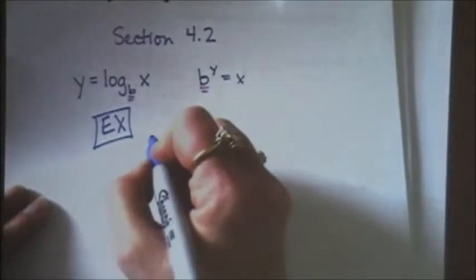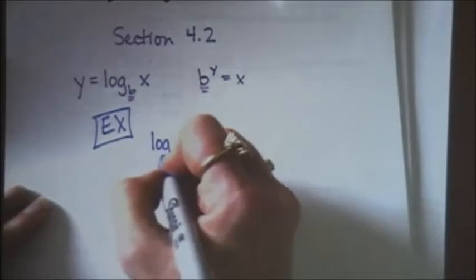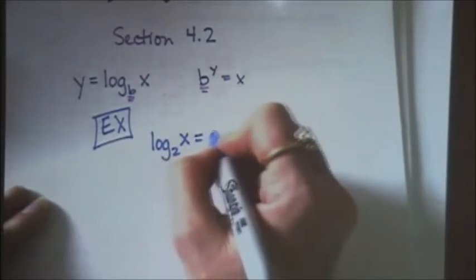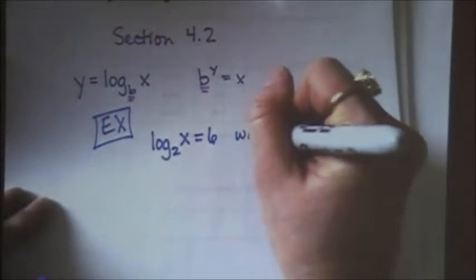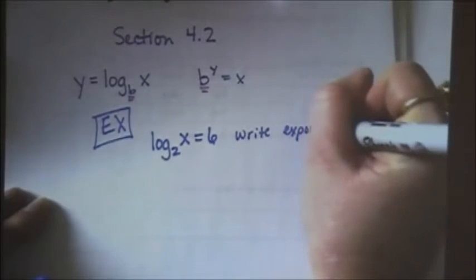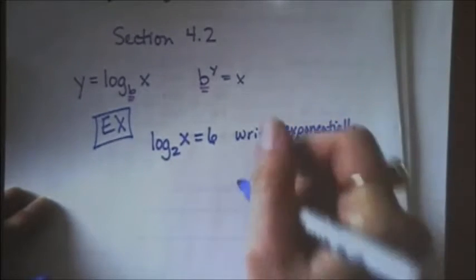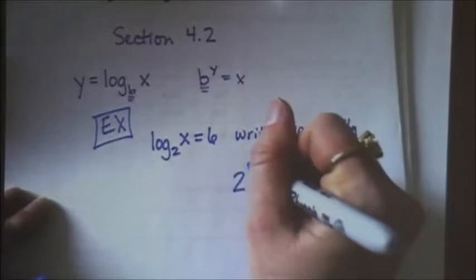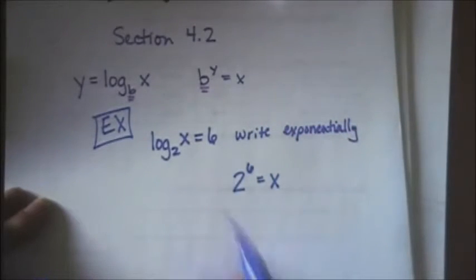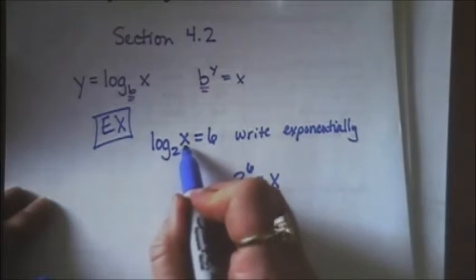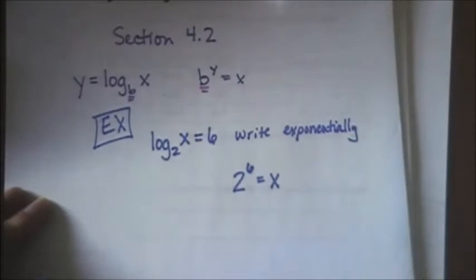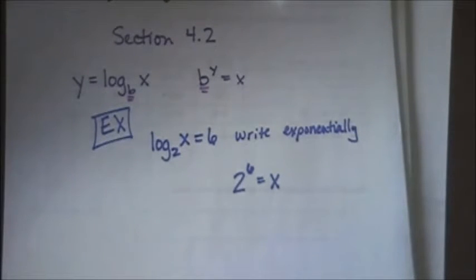They might write it as log base 2 of x equals 6 and they want you to write exponentially and you would write that as 2 to the 6th power equals x because the base becomes the big base, the answer becomes the exponent, and this value which is called the argument becomes the answer. So that's what they're expecting you to do when they ask you to rewrite it. Other than that, section 4.2 is mostly graphing.